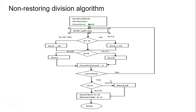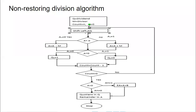If the most significant bit of A is equal to 1, then it is negative. So we add the content of A with M to perform the correction. After adding, that result will be taken as the final remainder. If the sign bit is 0, then no correction is needed.